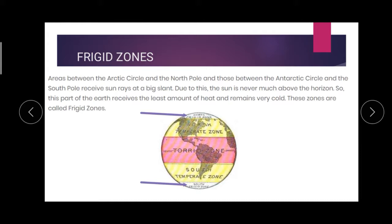Here, the sun is never much above the horizon. So they have the least amount of heat and it remains very, very cold. The temperature is very, very cold. These zones are called frigid zones.